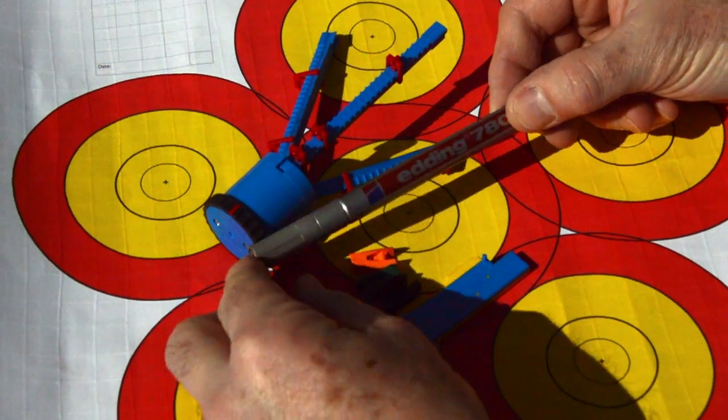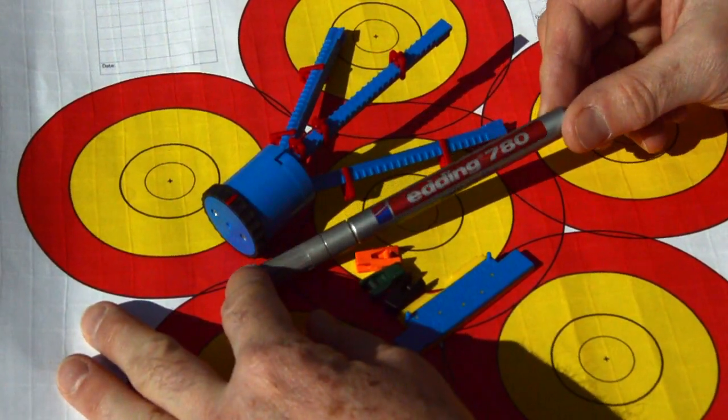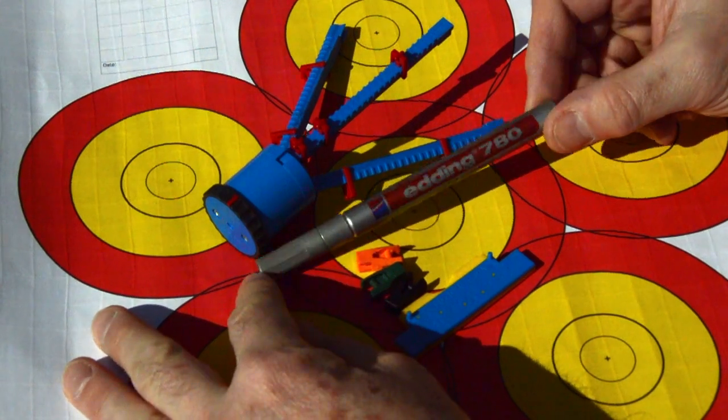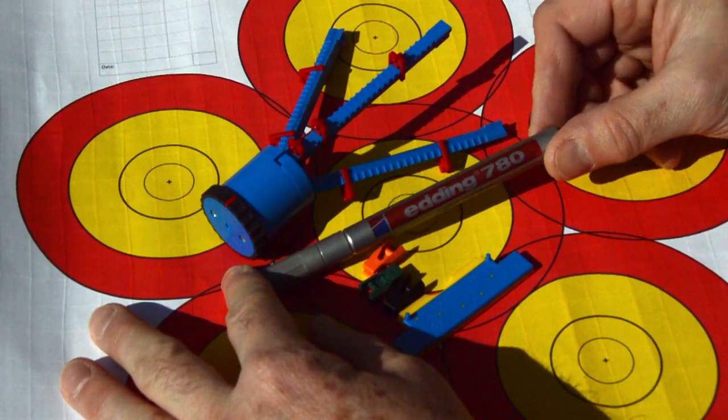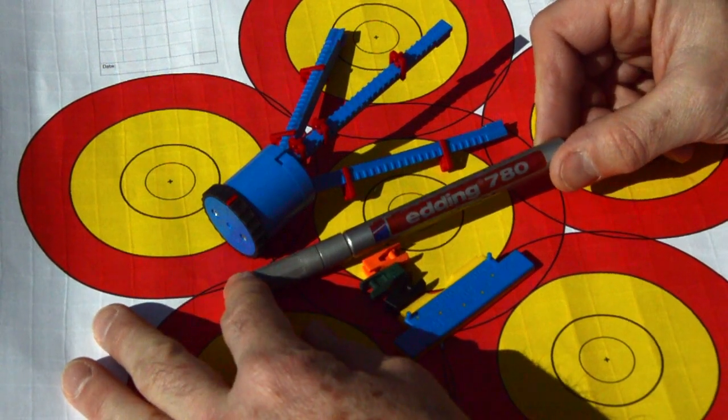We've got a paint marker. This one happens to be silver, come in lots of different colors. Silver looks great against the carbon fiber backing. You can use white whatever you fancy.